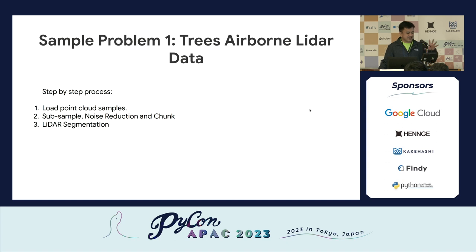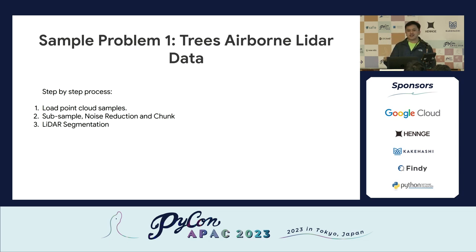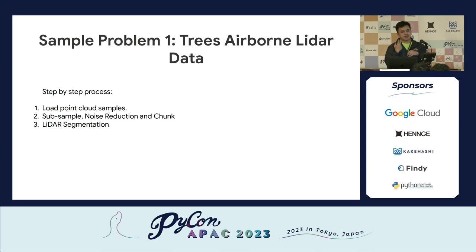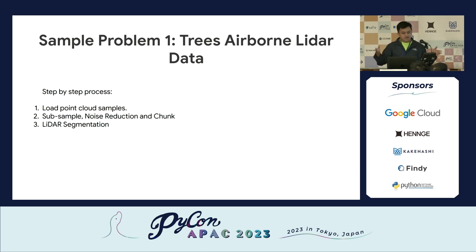We'll go through just three steps with airborne LiDAR data: we load the point cloud samples, we subsample, noise-reduce, and chunk, and then we do our LiDAR segmentation. Since we have airborne LiDAR data, let's say we want to know the diameter of the trees — below the crowns are the trunks. We want to apply this to the whole mountain to get a visualization of how thick the trunks are at a wider scale. First, we need to load the sample.